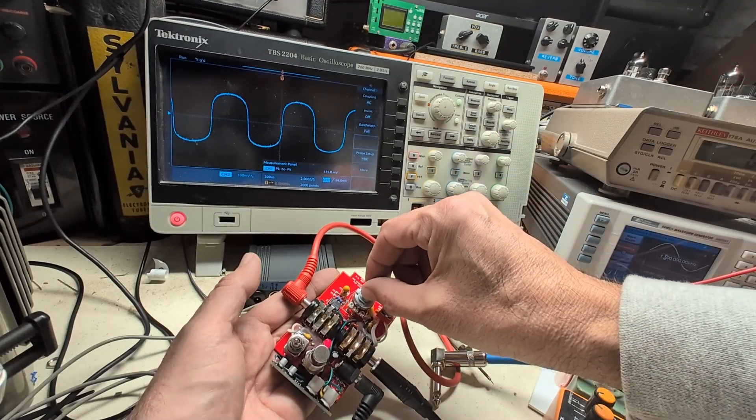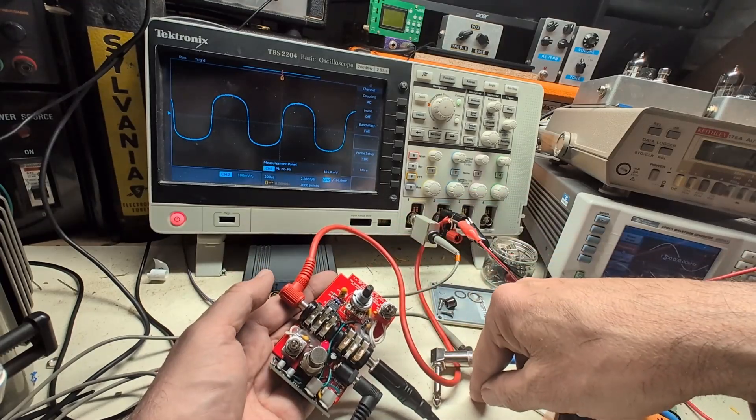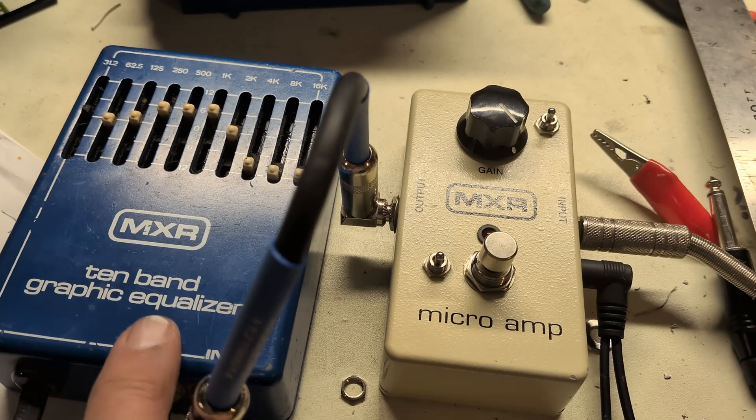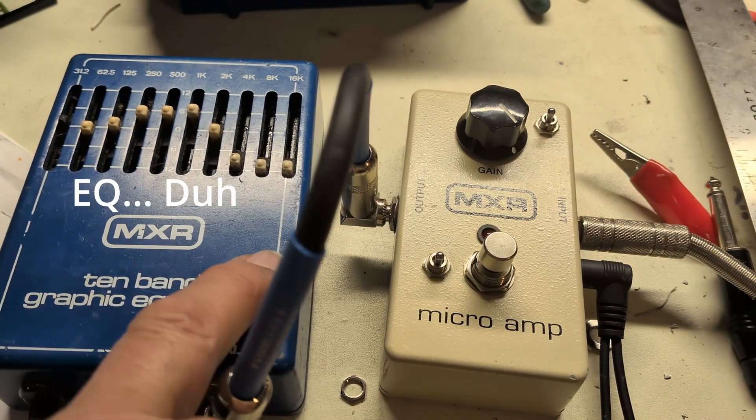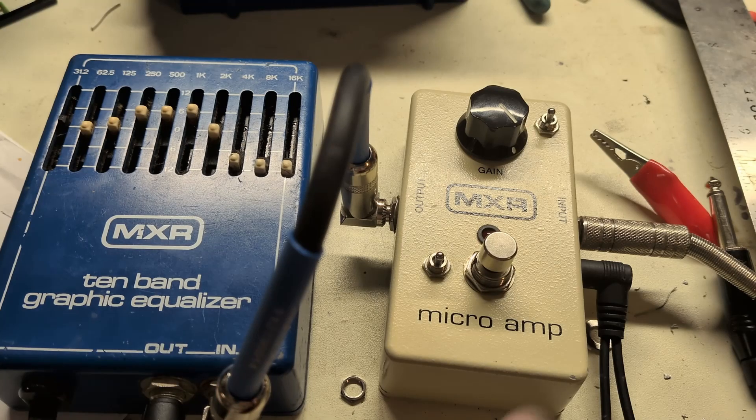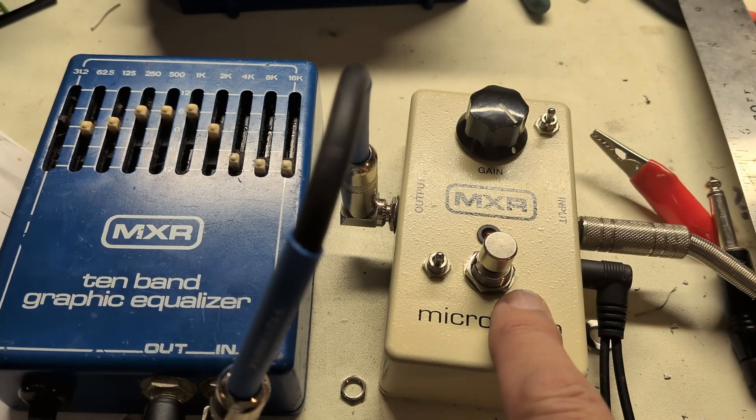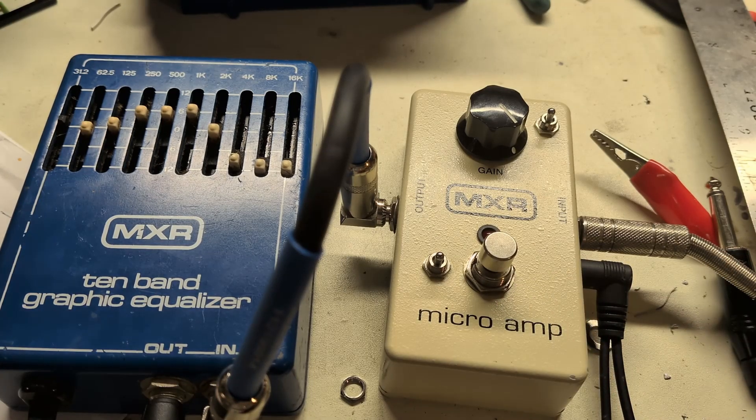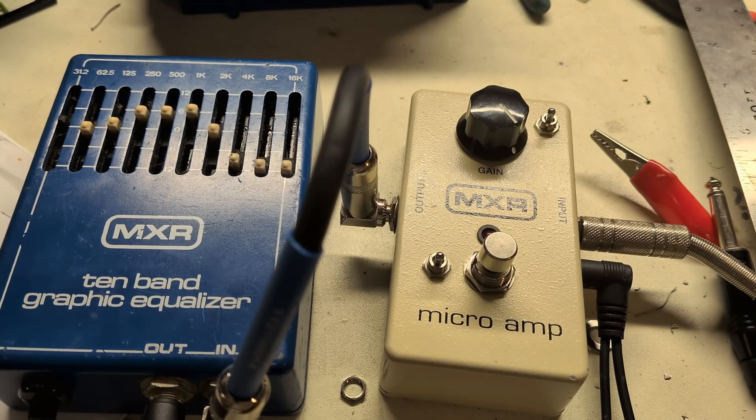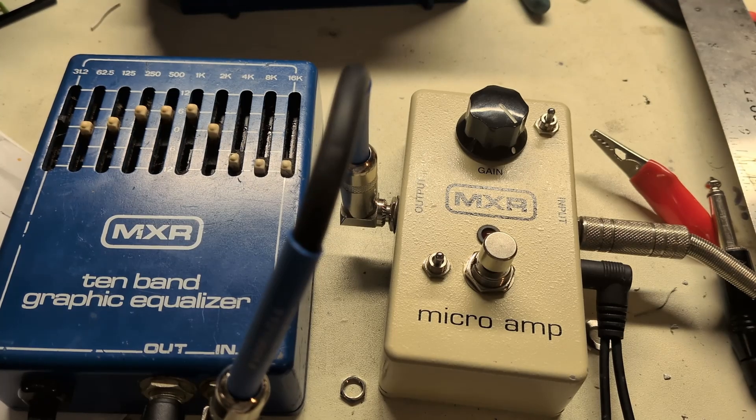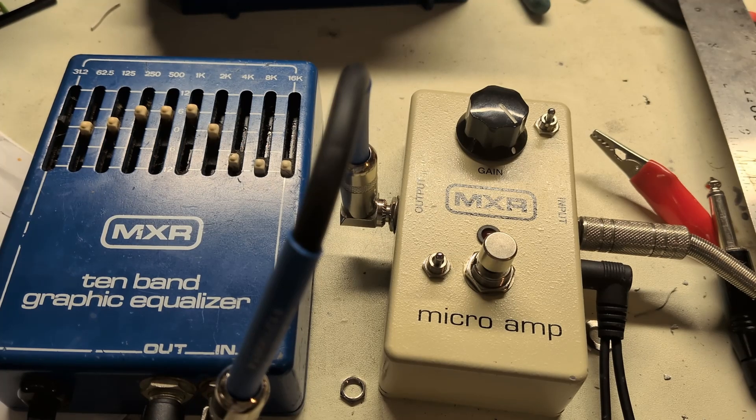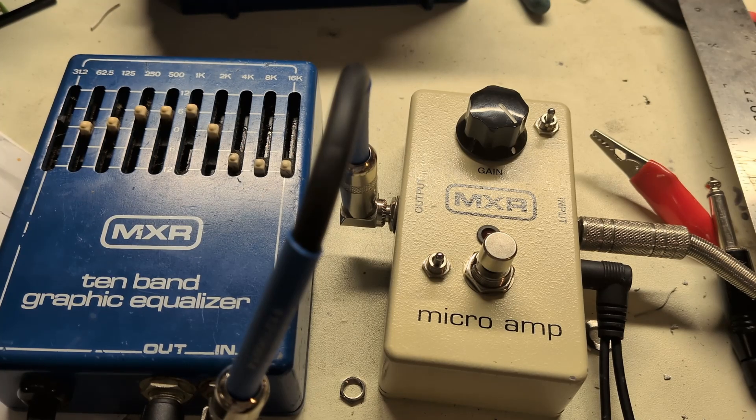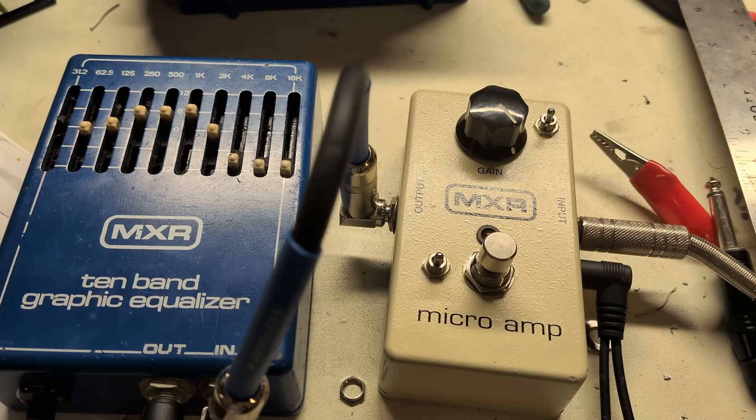Ready for the tone test. We've got a vintage MXR graphic EQ. I've set it up how I think it should be. And we've got the modified micro amp. And then we're playing into a JCM 800 greenback 4x12s. And this is without the pedal. OK, let's put the pedal on.